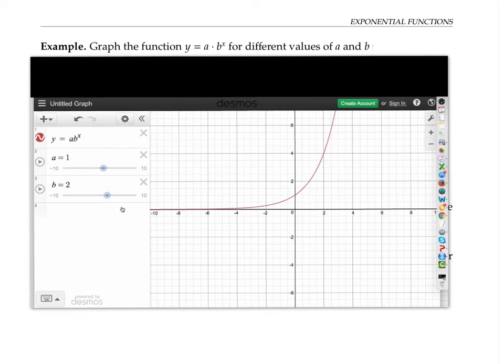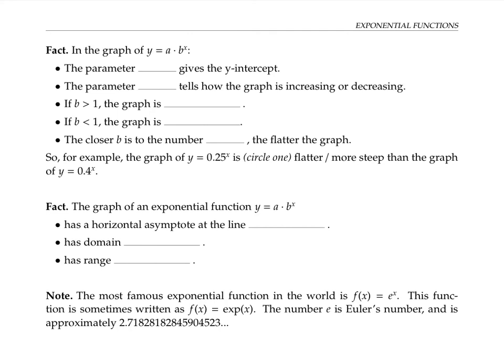We'll summarize all these observations on the next slide. For an exponential function y = a·b^x, the parameter a gives the y-intercept. The parameter b tells us how the graph is increasing or decreasing.